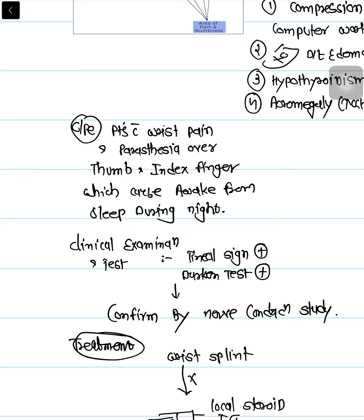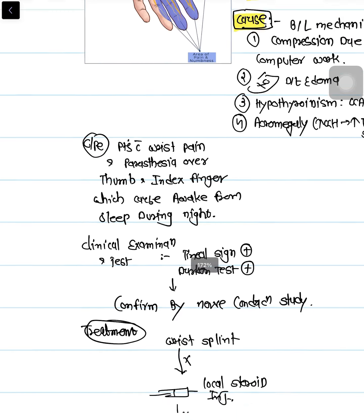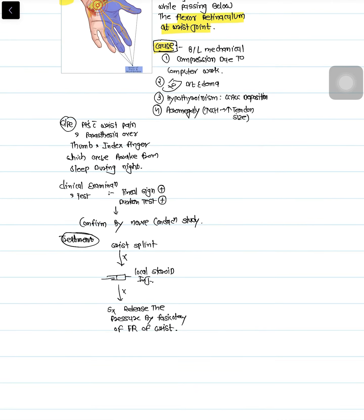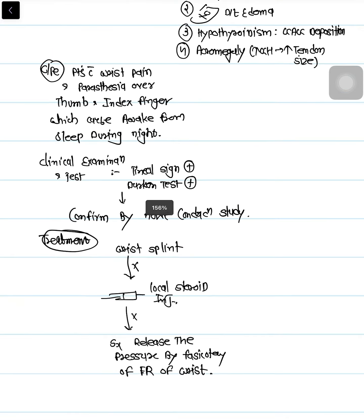So how will a patient present? The patient may say: 'I have a wristband sensation and numbness of the thumb and index finger.' Sometimes this pain will awaken them from sleep during the night. We provisionally diagnose this as carpal tunnel syndrome because it is the most common.